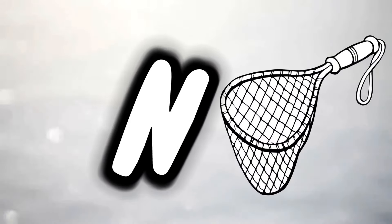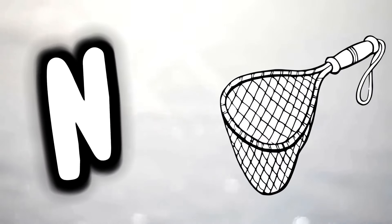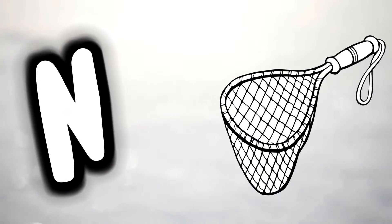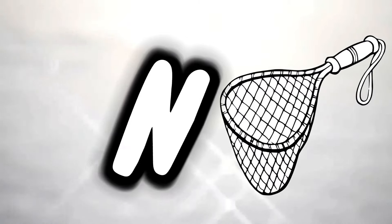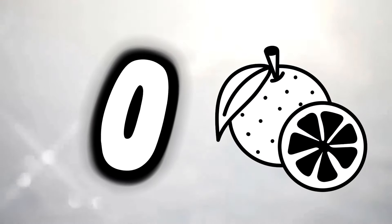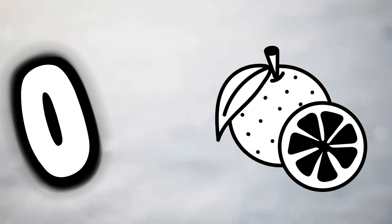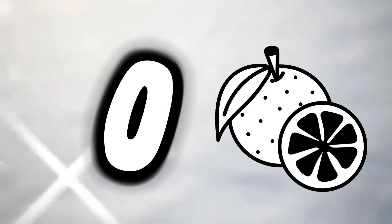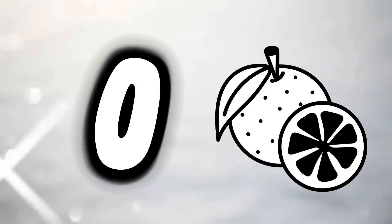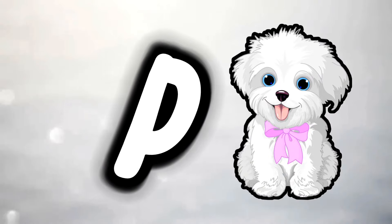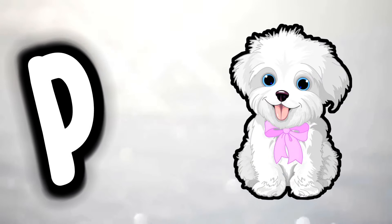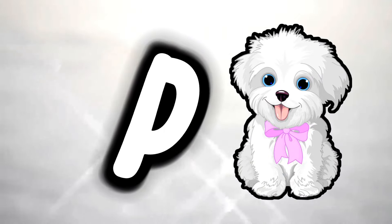M is for mat, m-m-mat. N is for net, n-n-net. O is for orange, o-o-orange. P is for pet, p-p-pet.